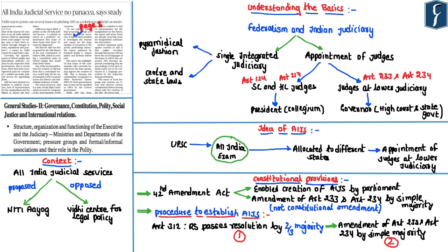The first article appears on page number three. The title of the article is 'All India Judicial Service: No Panacea, says the study.' This article shall be important mainly from the perspective of GS Paper 2, Governance, under the subsection 'Structure, Organization and Functioning of the Judiciary.' Recently, the Niti Aayog published a strategic document known as the Strategy for New India at 75, in which it proposed the creation of the All India Judicial Services to reform judicial administration in India. However, this article highlights that the Vidhi Centre for Legal Policy has opposed the creation of the All India Judicial Services.